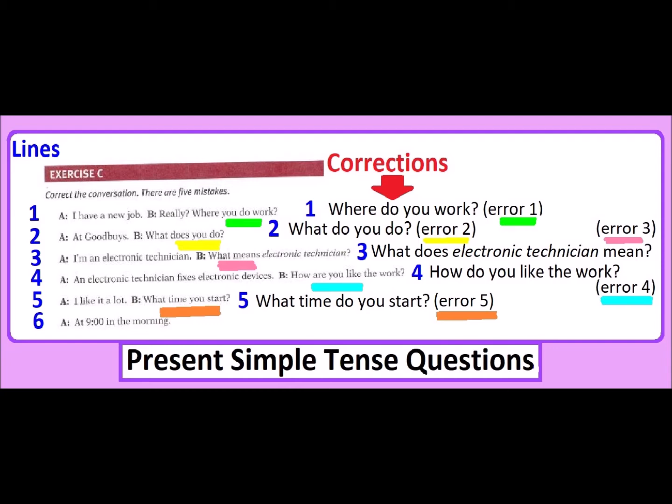We cannot ask questions in English language without auxiliaries. Where is a question word about location; it is always followed by an auxiliary verb.